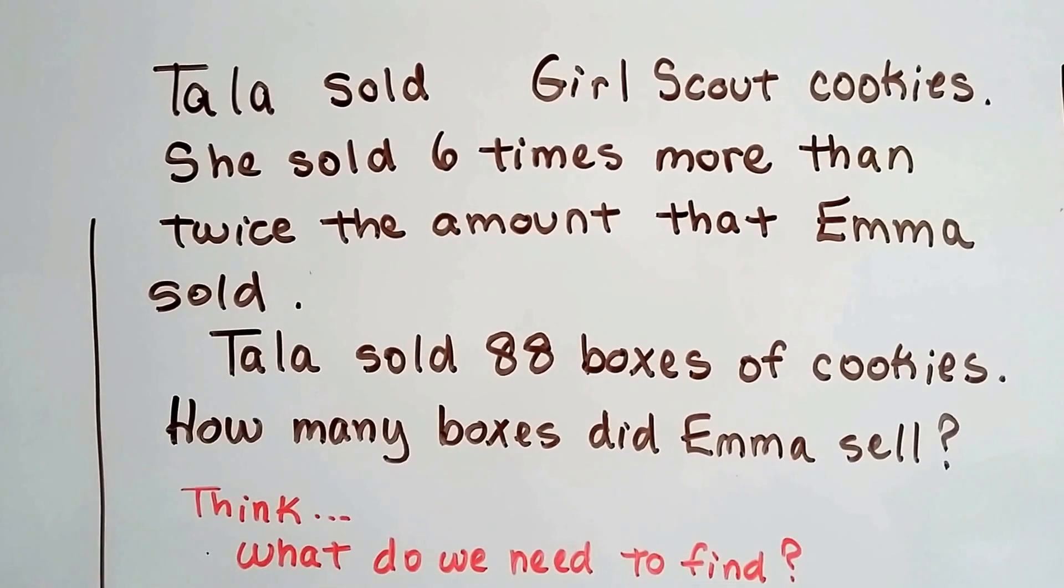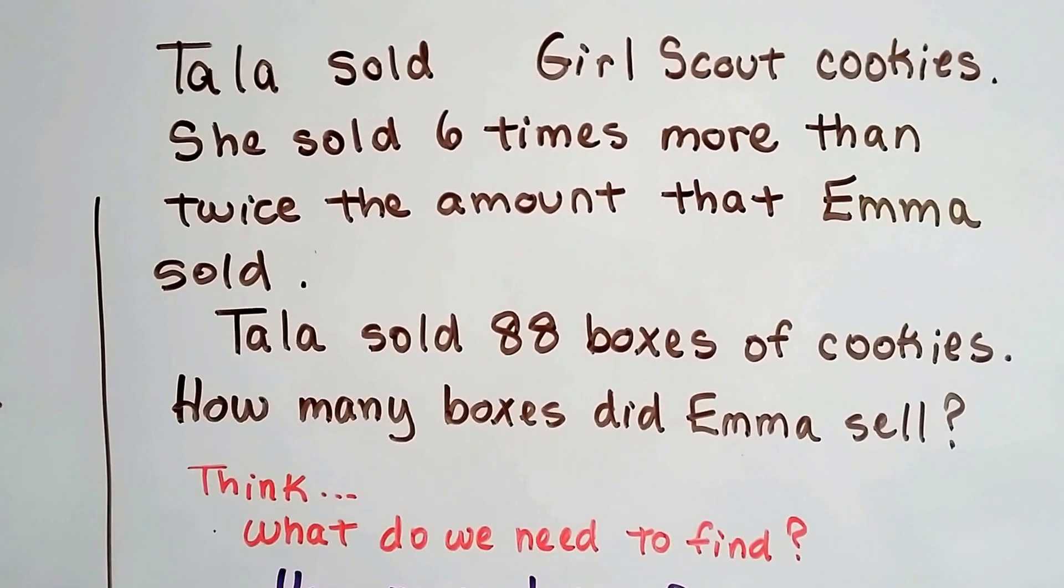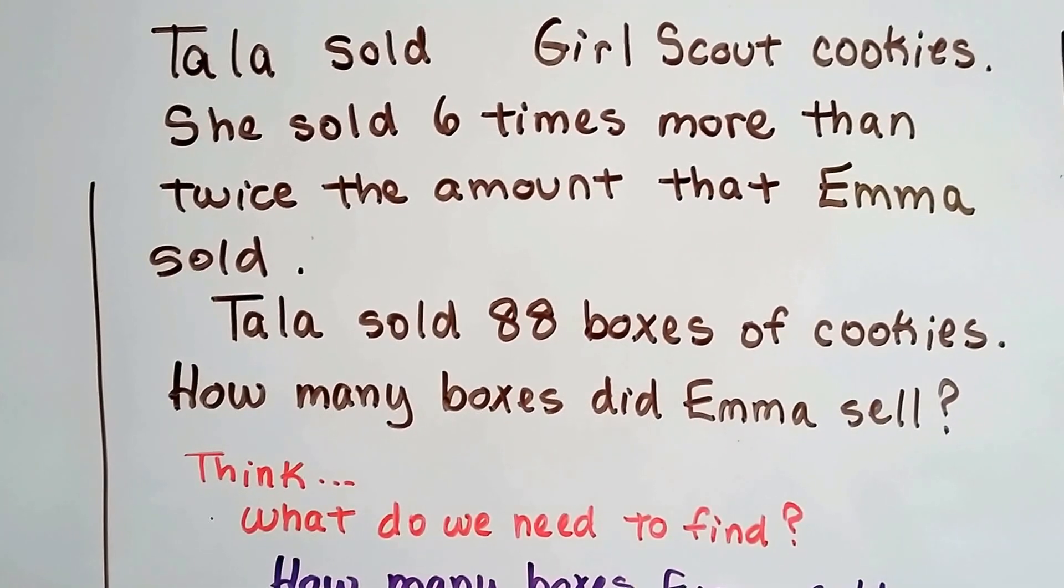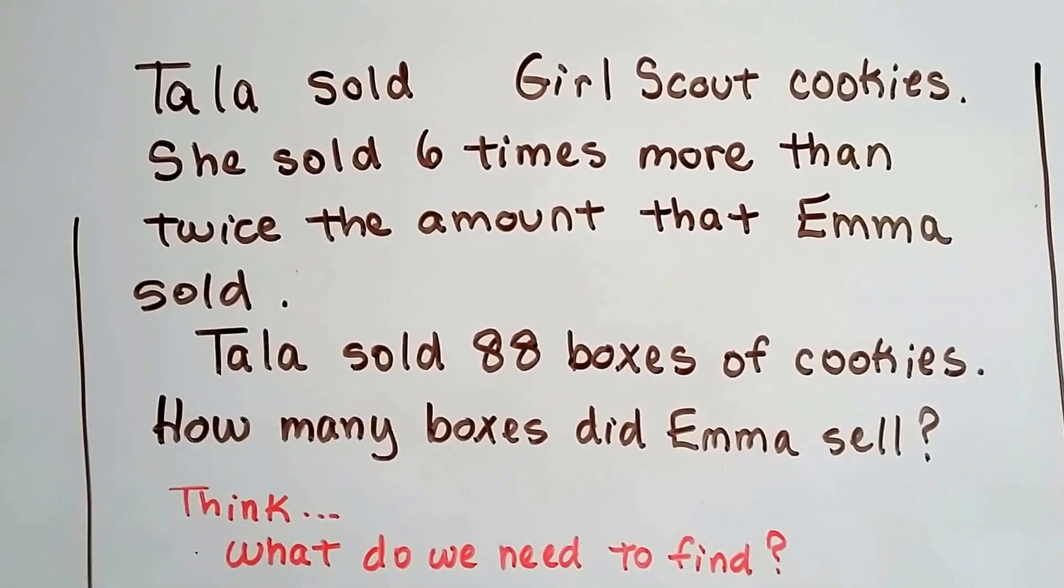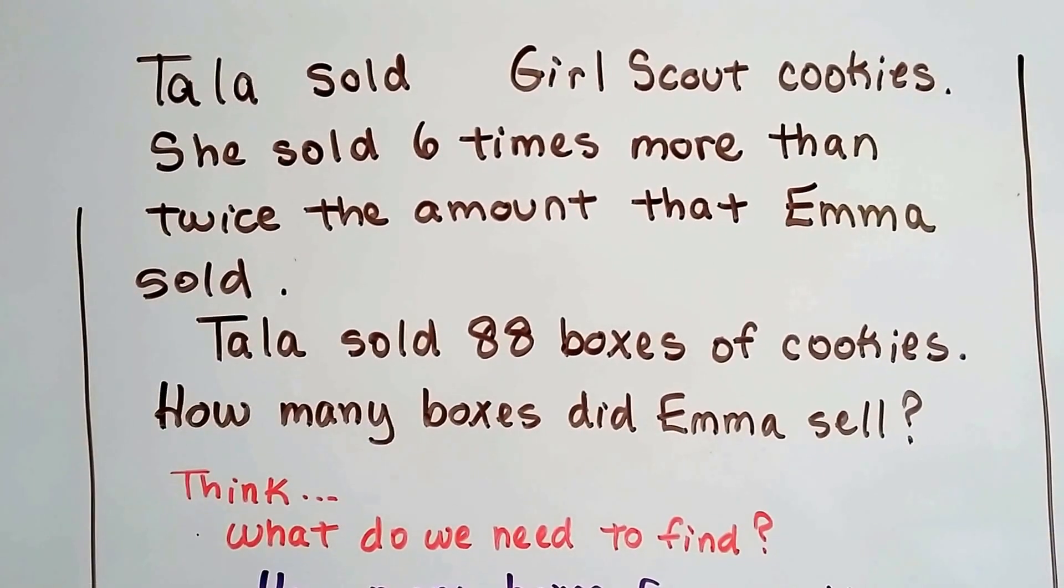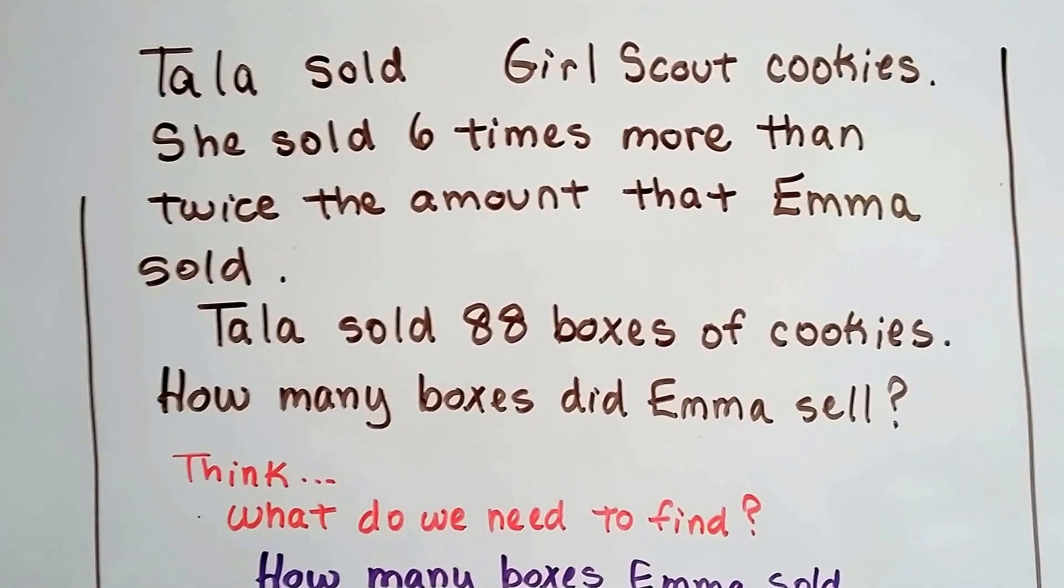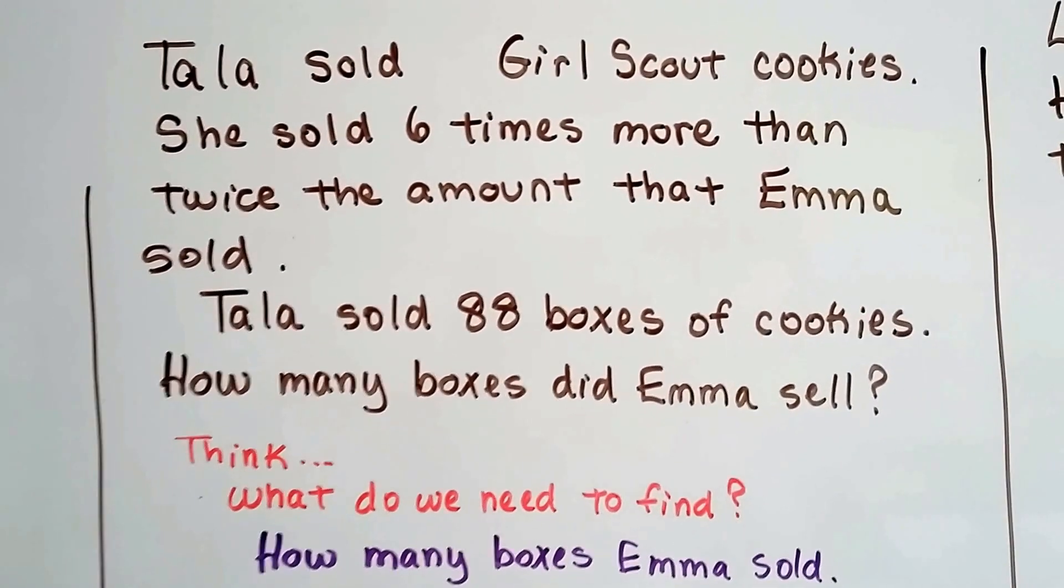Tala sold Girl Scout cookies and she sold six more than twice the amount that Emma sold. Tala sold 88 boxes of cookies. So how many boxes did Emma sell? Wow, that sounds confusing, doesn't it? She sold six more than twice the amount that Emma sold? Let's break this down.